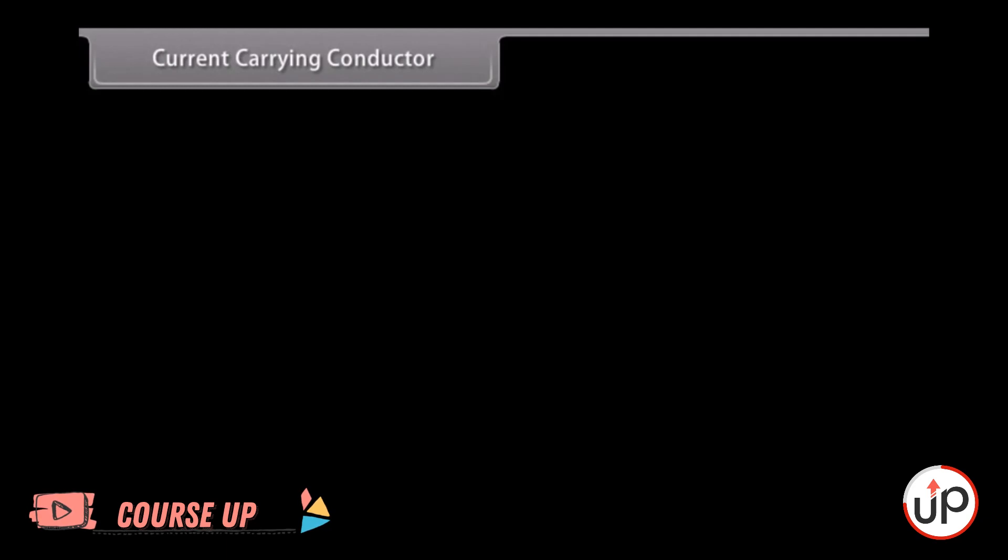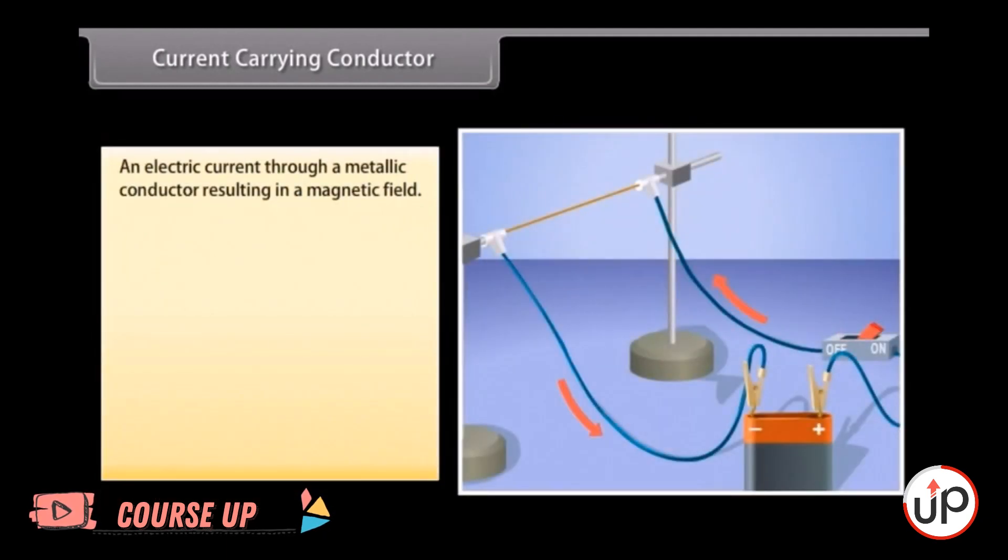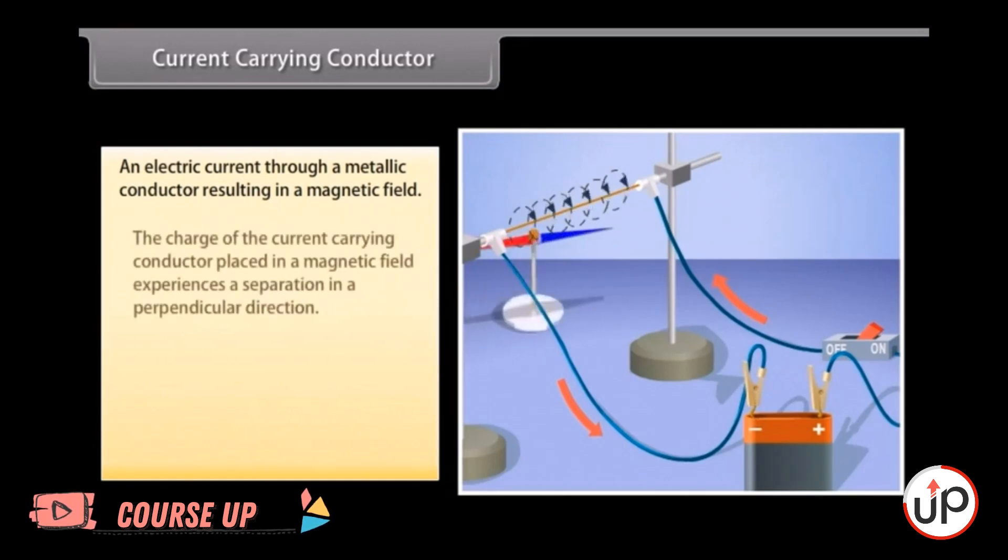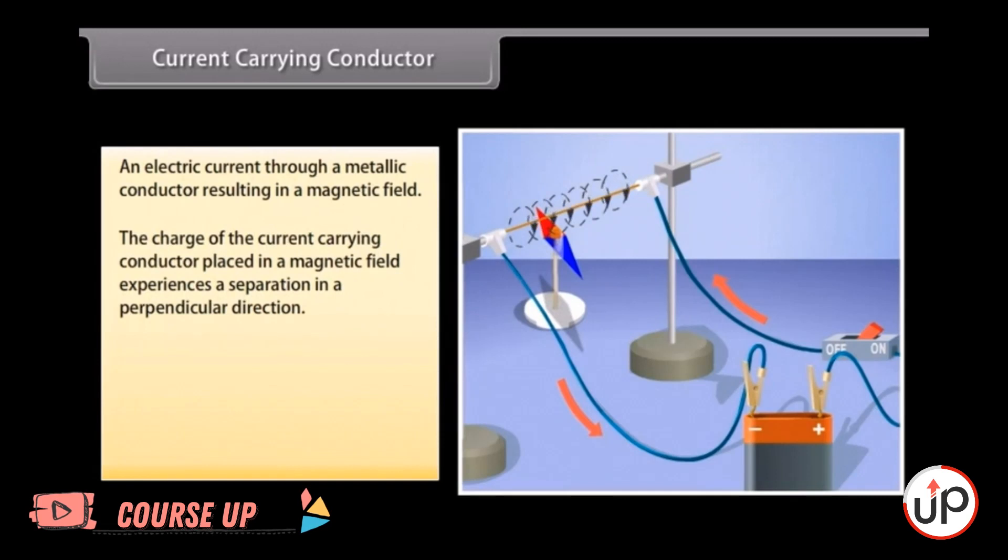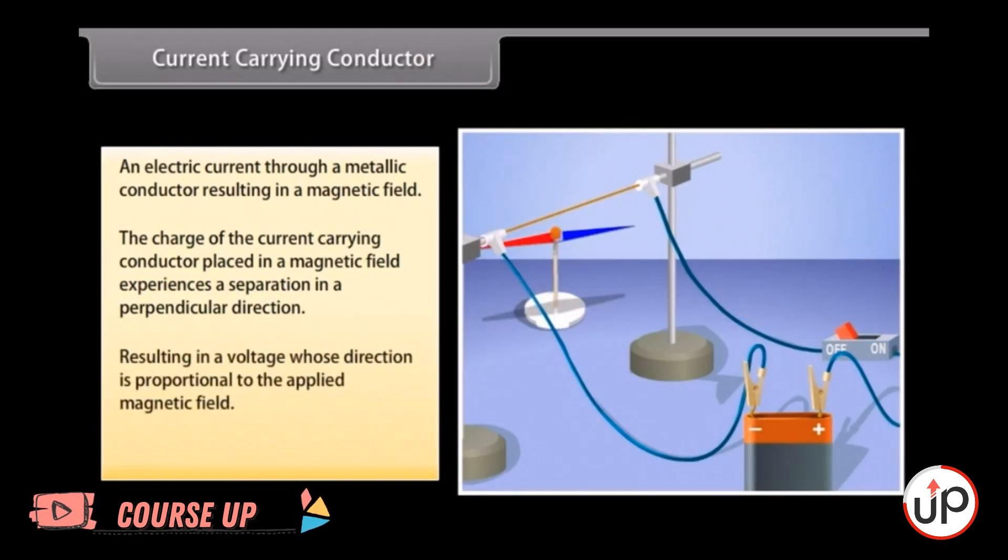Current carrying conductor. An electric current passing through a metallic conductor results in a magnetic field being created around it. The charge of the current carrying conductor placed in a magnetic field experiences a separation in a direction that is perpendicular to the current and the magnetic field. This results in a voltage whose direction is proportional to the applied magnetic field. This effect can also be reversed.